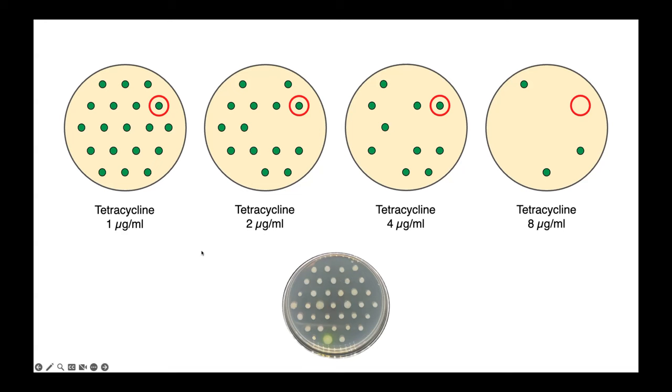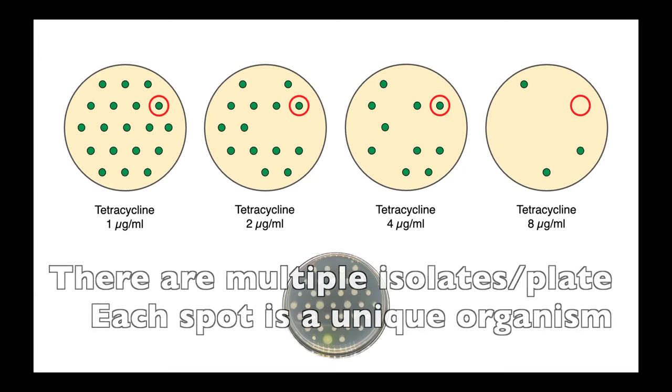This is a dilution series of tetracycline from 1, 2, 4, and 8 micrograms per milliliter. Each of these plates has been inoculated with a bacterial isolate and incubated overnight.